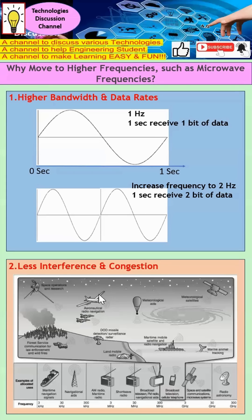Next, the second reason is when we move to higher frequency, we have less interference. Actually, all those at low frequency are already congested. You can see there are various broadcasts and applications at all the lower frequencies. So we have no choice. We need to move to a new territory at higher frequency where we can have less interference. This is reason number two.